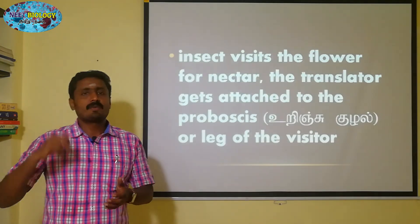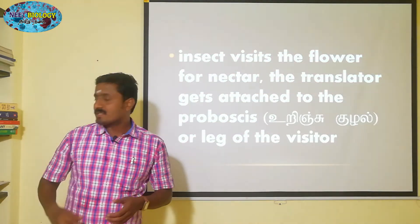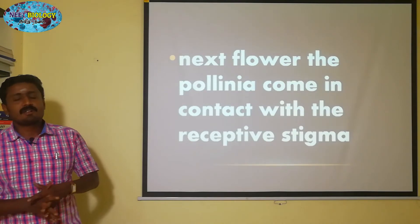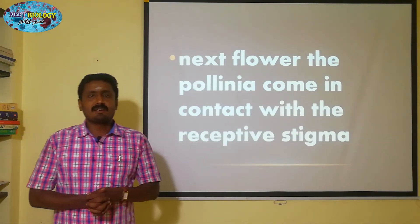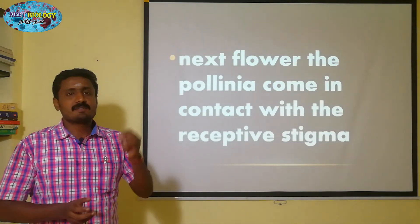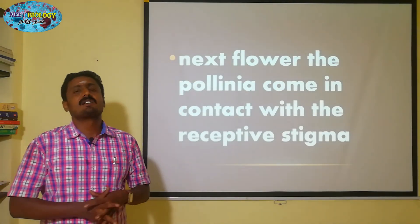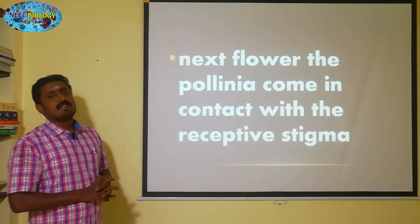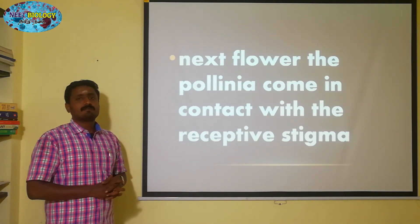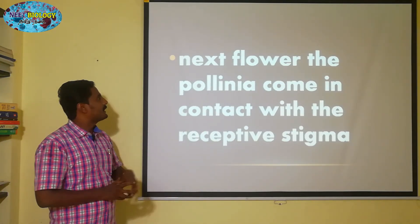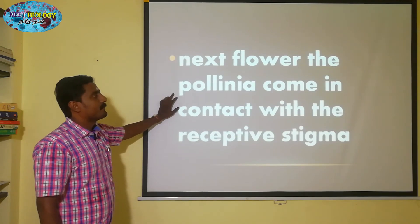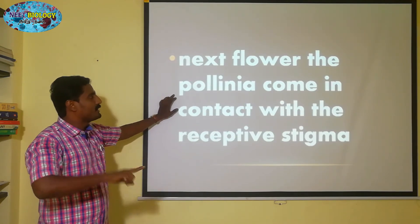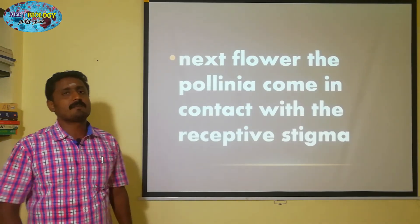So the insect goes to the next flower, and the stigma will accept that particular pollen grains which have been stuck on the leg or proboscis of the insect. The pollenia come into contact with the stigma.